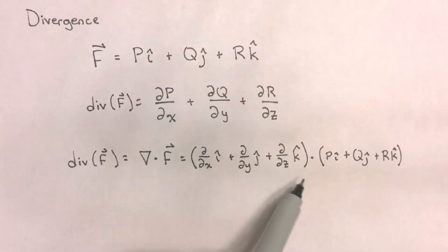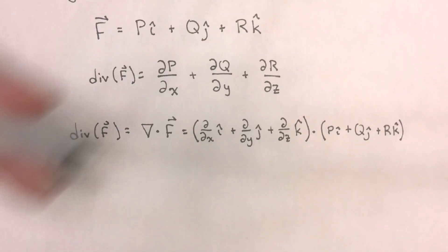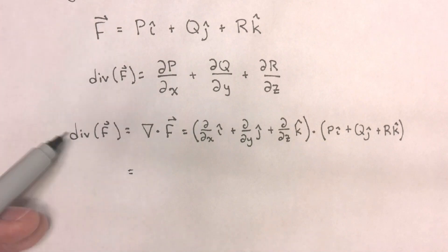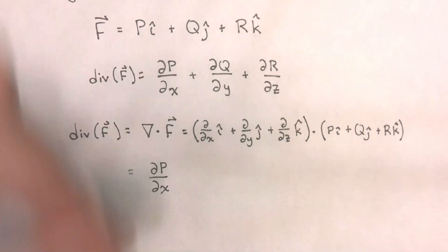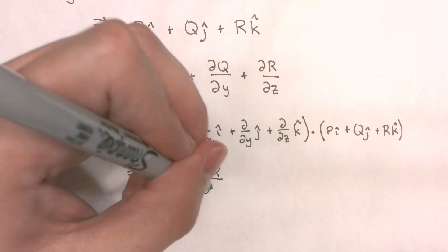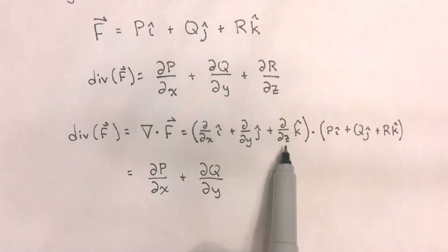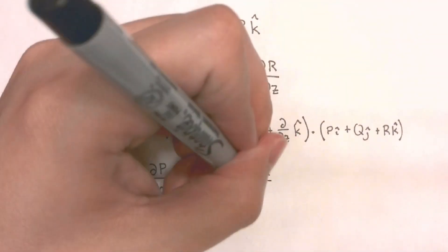If you were to imagine these were vectors and you were to take the dot product of these two vectors, you'll find that the final result is that the divergence of vector f equals partial p with respect to x, partial q with respect to y, and partial r with respect to z.